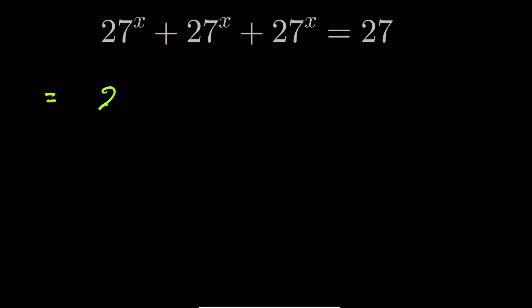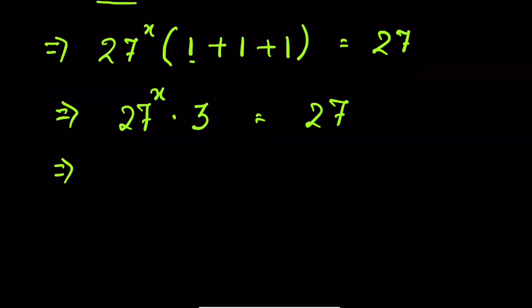So this we can write as 27 to the power x, parenthesis, 1, 27 to the power x divided by 27 to the power x equals 1. Same here, again 1 plus 1. Let's divide both sides by 3. 3 and 3 gets cancelled. 3 times 9 is 27.